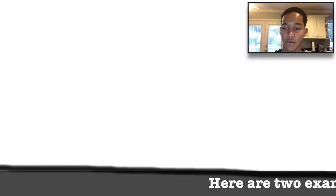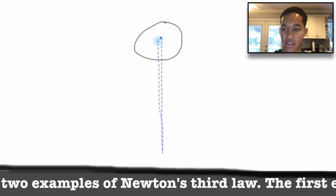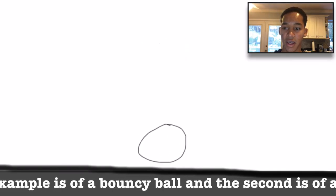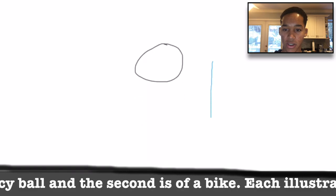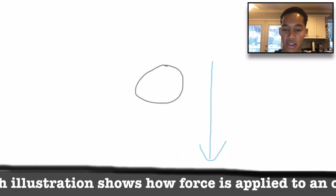Here are two examples of Newton's Third Law. The first example is of a bouncy ball, and the second is of a bike. Each illustration shows how force is applied to an object with an action, and another force occurs in the opposite direction as a reaction.